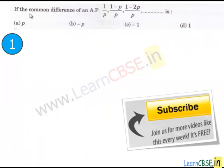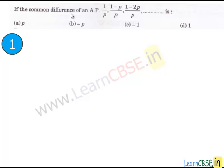Let's move to the next question. In this question, we have to find the common difference of an AP which is 1 upon P, 1 minus P upon P, 1 minus 2P upon P. Let's work out the problem.